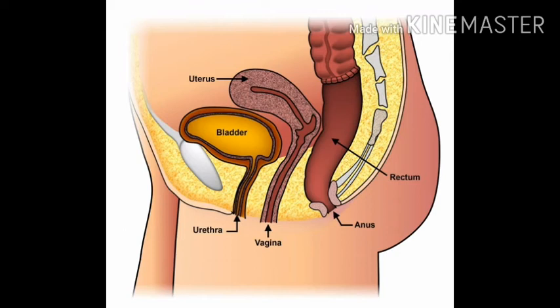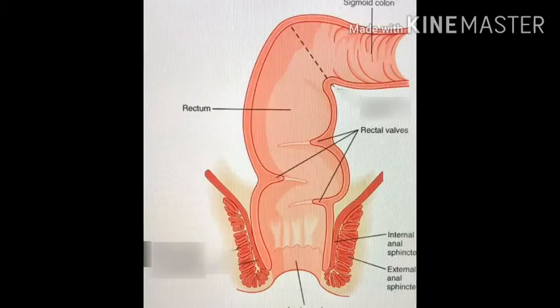The absorption of completely digested food takes place in the ileum. The inner wall of the ileum has outgrowths or finger-like projections inside the tube called villi, which increase the surface area of the ileum. When the simplest forms of food pass through the villi, they are absorbed and supplied to the blood capillaries running inside. Through the blood, the nutrients are transported to the whole body.